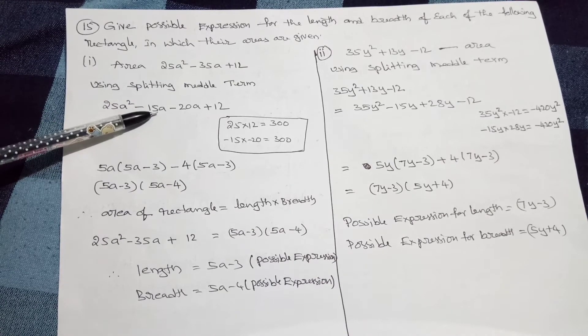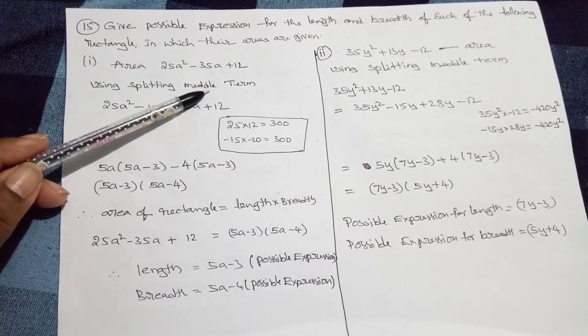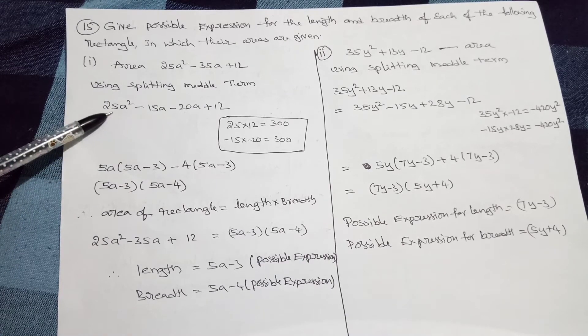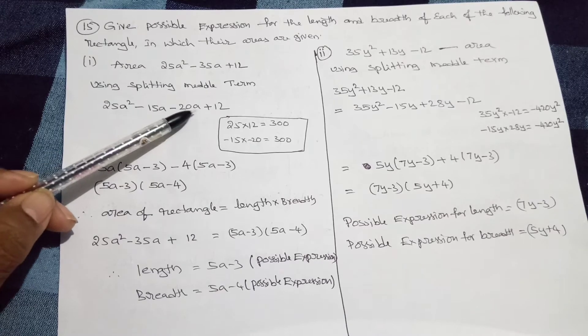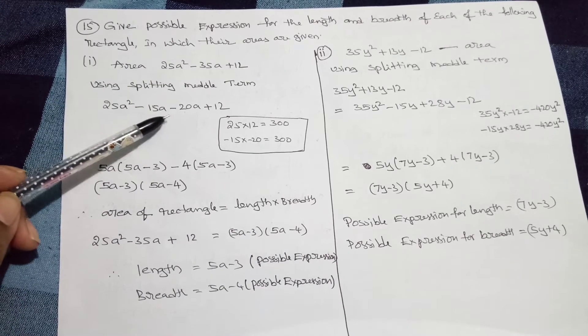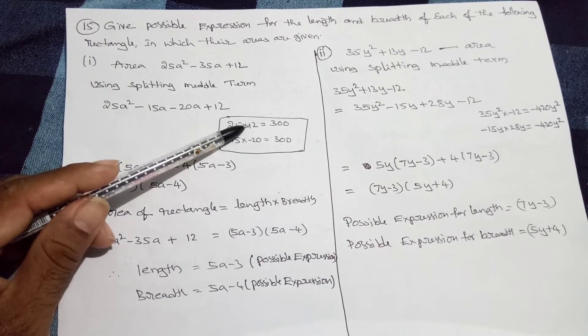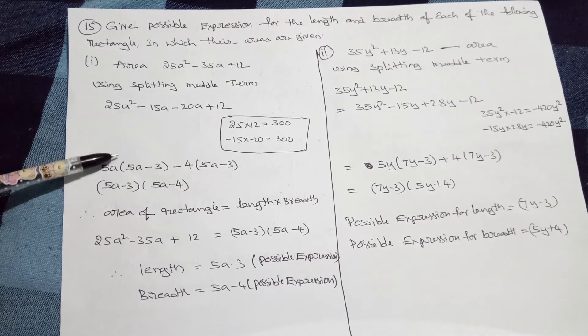Now, by using splitting middle term: 25a² - 15a - 20a + 12. So 35 can be written as -15a - 20a. So 15 times 25, 12s are 300. 15, 20s are also 300.